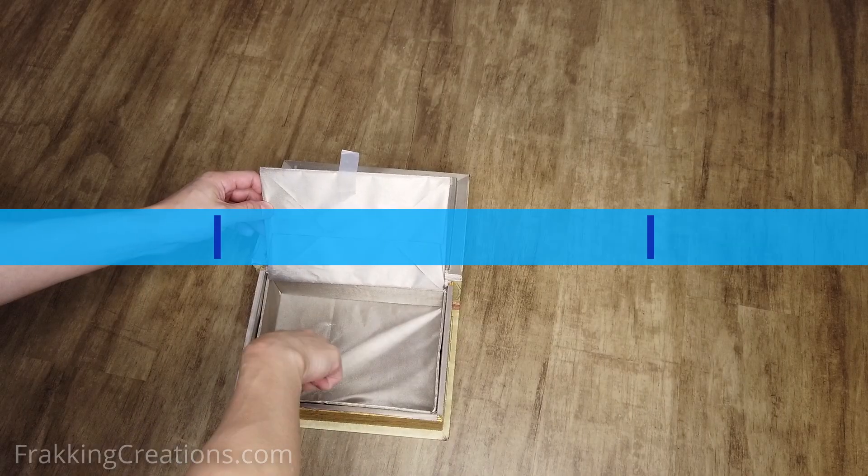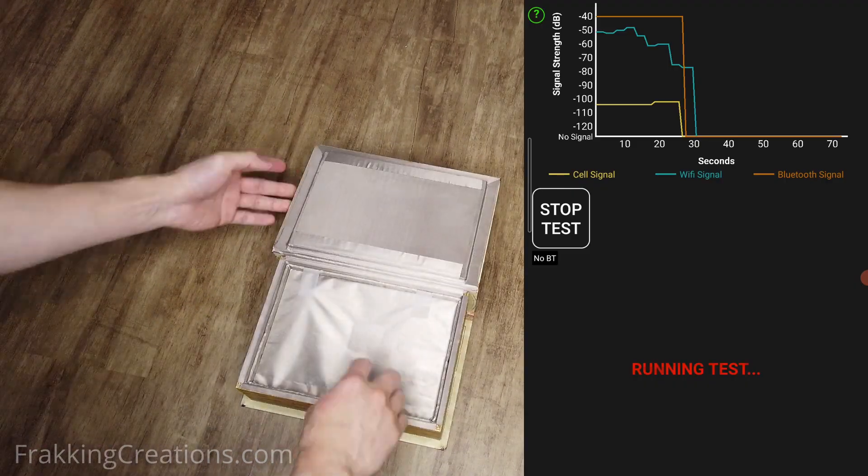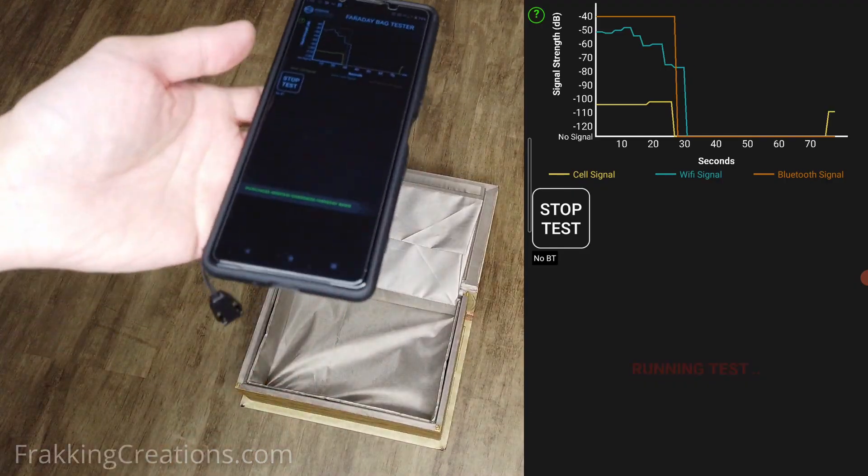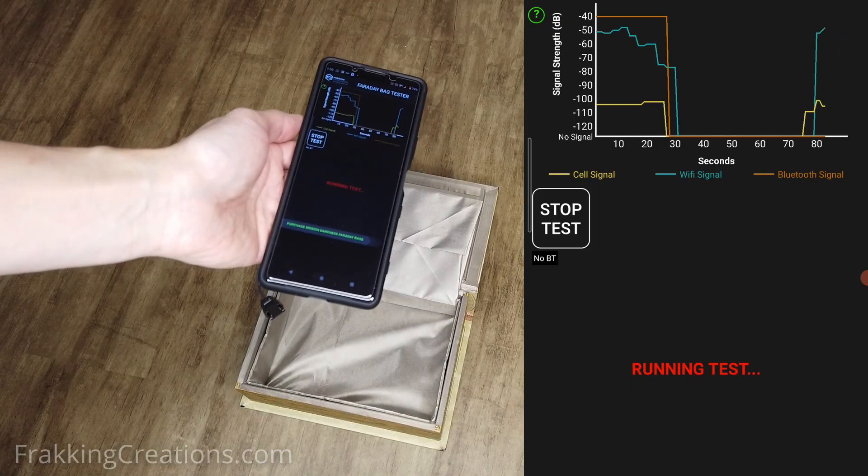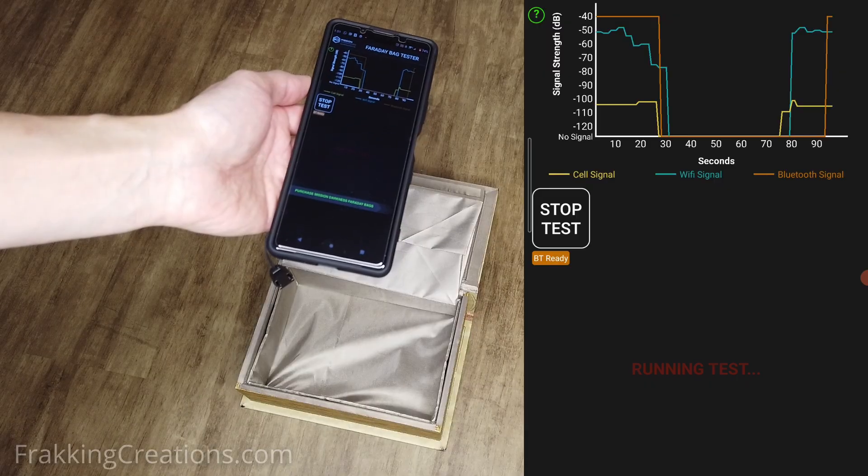Final modification. Before making any final modifications I'm going to test using the bottom panel as an inner lid. This may be enough to resolve the leak issue at the top. Testing reveals that this works and so I will finalize the design this way.